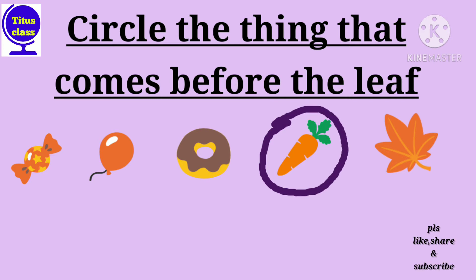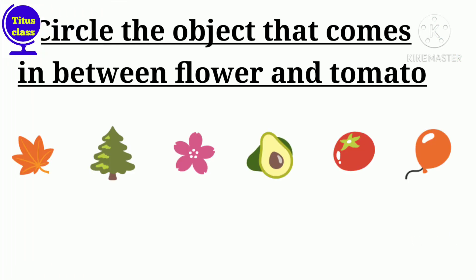Now, my next question is, circle the object that comes in between flower and tomato. Which object is this? Yes, between flower and tomato? Avocado. Yes, it's fruit. Avocado.